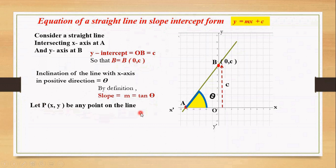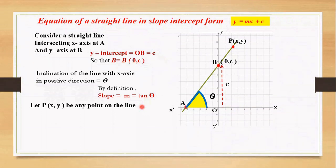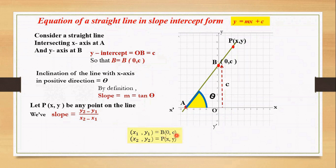Let P(x, y) be any point on the line. Here in the figure we know the coordinates of two points: B and P. Also we have derived the formula for the slope of a straight line passing through two points — slope equals y2 minus y1 divided by x2 minus x1, where (x1, y1) and (x2, y2) are the two points on the line. Here let's consider B as (x1, y1) and P as (x2, y2).